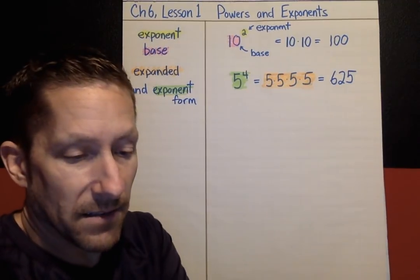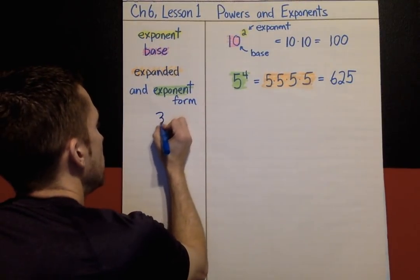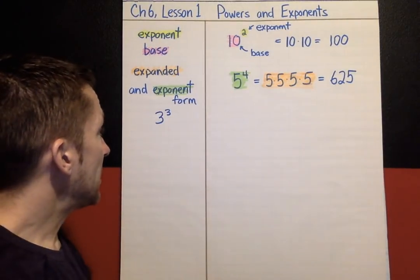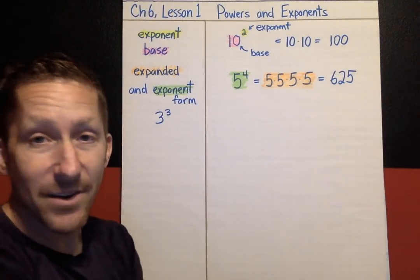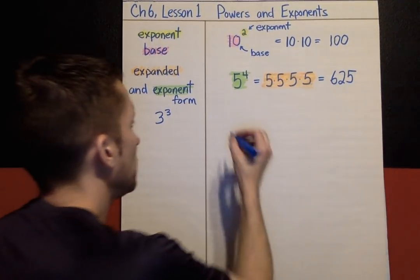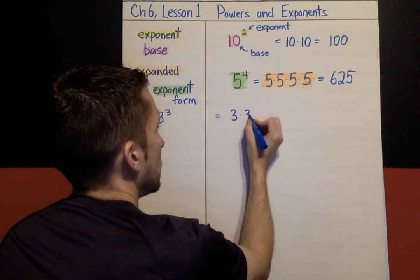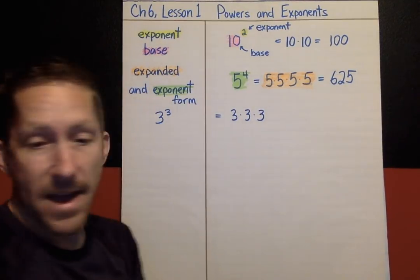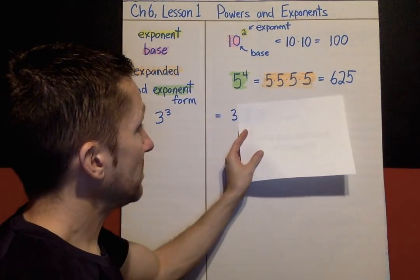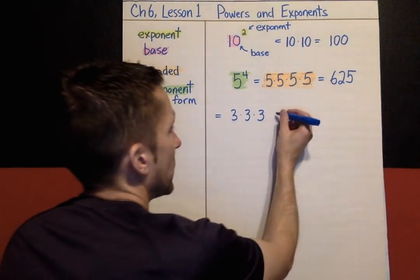Let's look at some examples. 3 to the 3rd power — really fast, what do you think that is? If you're thinking 9, you're making that common mistake. It is not 3 times 3. Write it out in expanded form: 3 to the 3rd power means 3 times 3 times 3. Working my way across, 3 times 3 is 9, and 9 times 3 is 27.